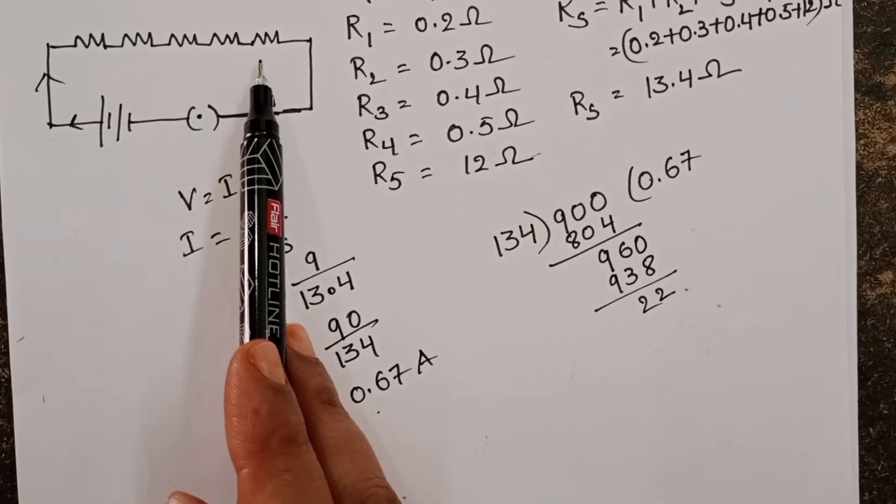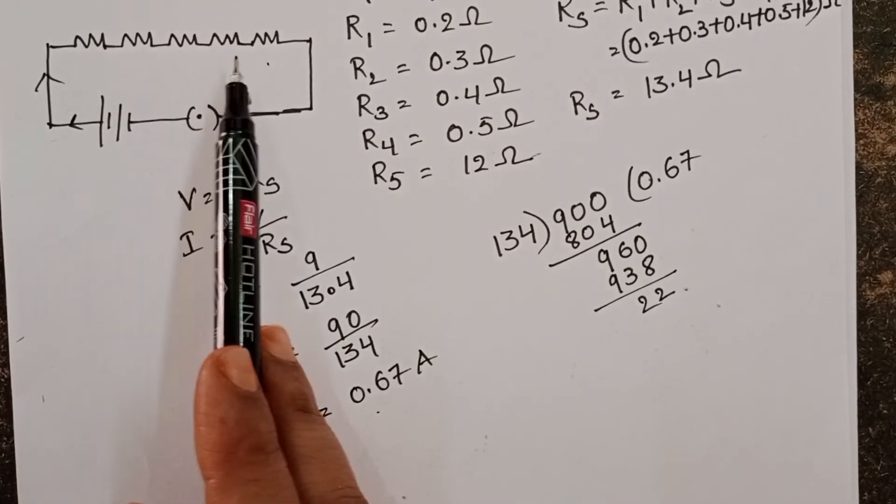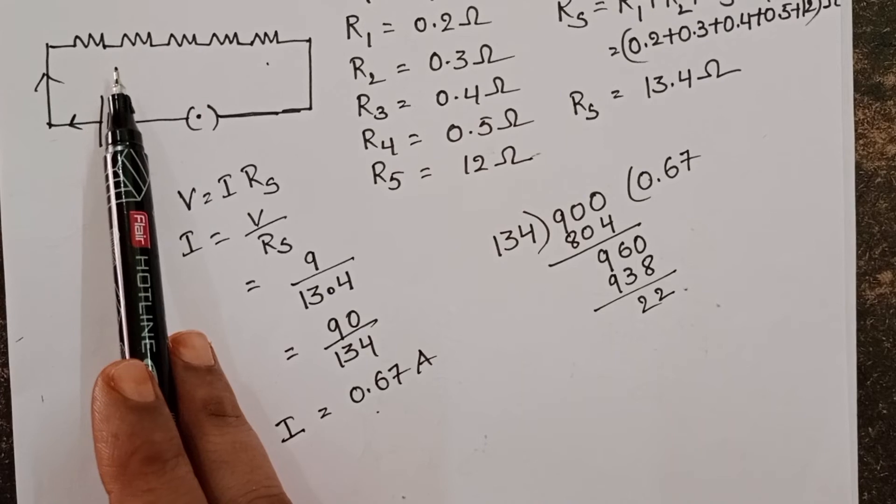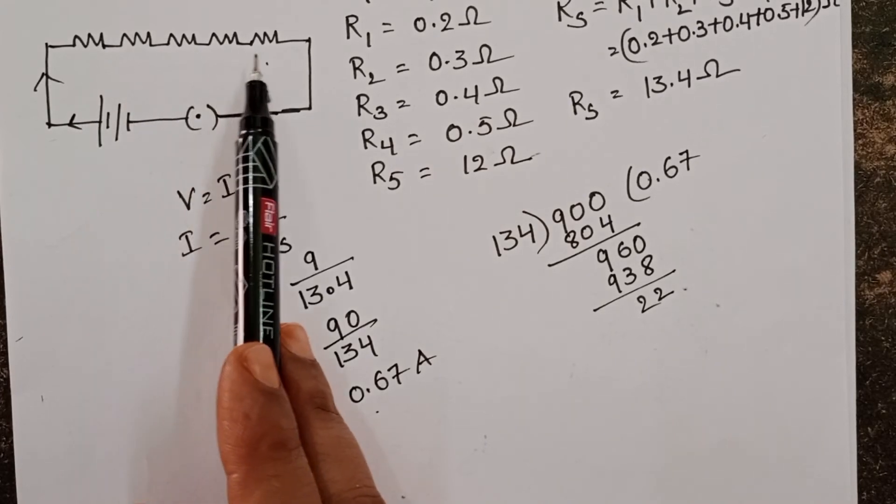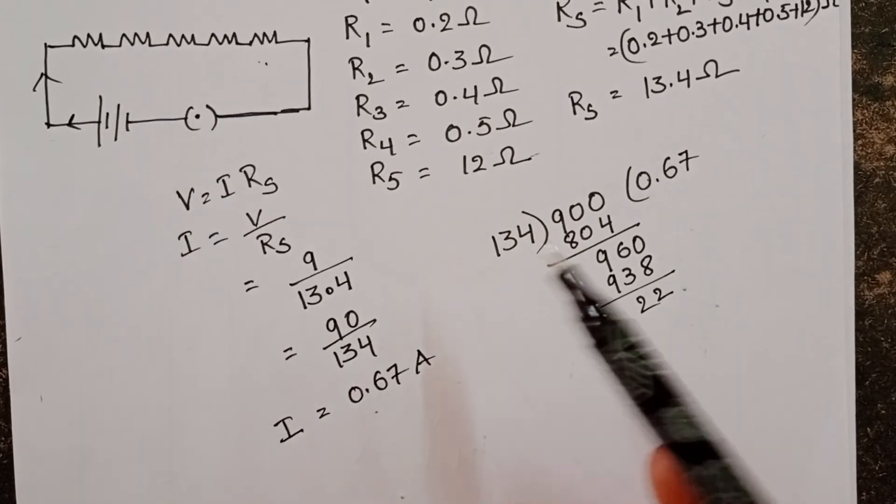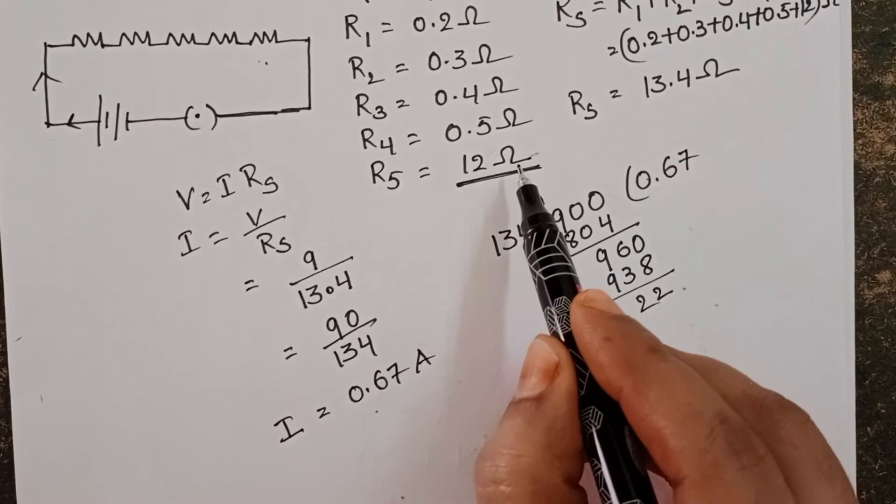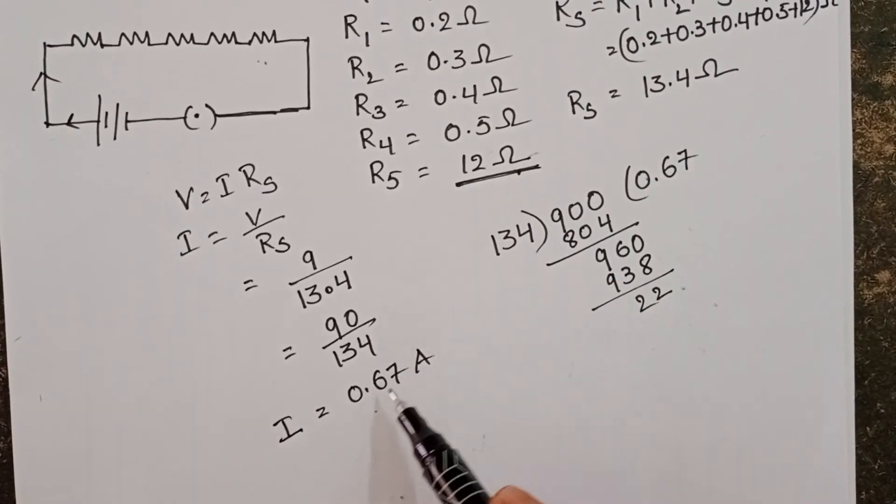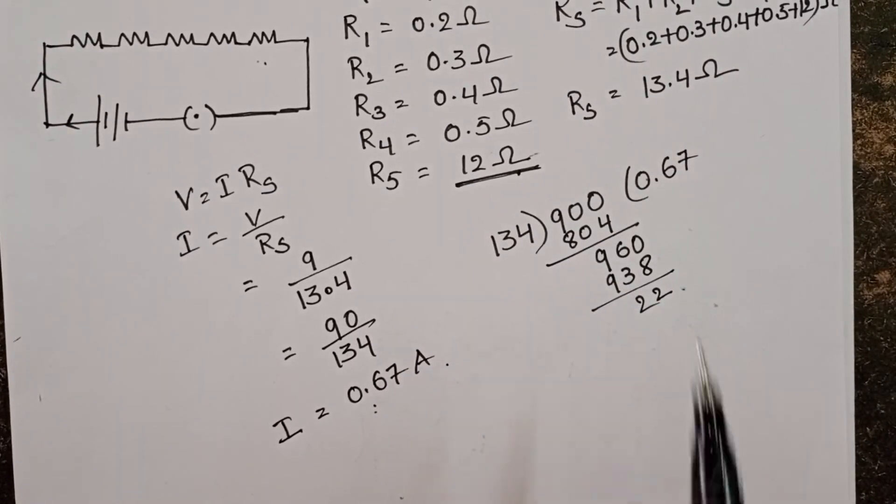All these resistors are connected in series. In series connection, the current passing through each and every resistor is constant. So the current passing through the 12 ohm resistor is also 0.67 amperes.